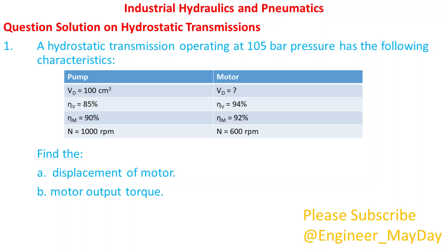A hydrostatic transmission operating at 105 bar pressure has the following characteristics. On the pump side we have: volumetric displacement VD equals 100 cubic centimeters, volumetric efficiency equals 85 percent, mechanical efficiency equals 90 percent, and speed N equals 1000 revolutions per minute.